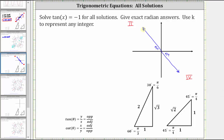Let's also sketch the reference triangles. In the second quadrant, the opposite leg is one, the adjacent leg is negative one, and the hypotenuse is √2. In the fourth quadrant, the opposite side is negative one, the adjacent side is one, and the hypotenuse is √2. Notice how for both reference triangles, the ratio of the opposite side to the adjacent side is negative one.